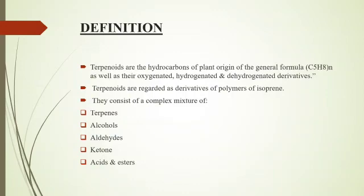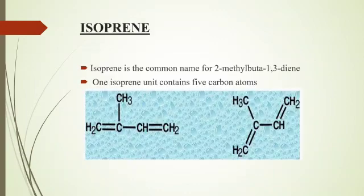Terpenoids are regarded as derivatives of a polymer of isoprene. They consist of a complex mixture of terpenes, alcohols, aldehydes, ketones, acids, and esters. Isoprene, the common name for 2-methylbuta-1,3-diene, has one isoprene unit consisting of five carbon atoms, as you can see in the picture.